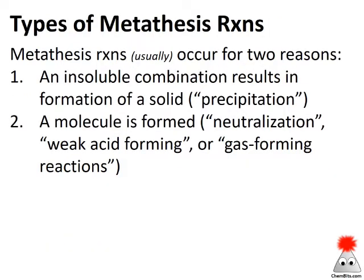Usually when we're looking at metathesis reactions, there are two things that can occur that will make the reaction happen. Number one is that one of the combinations results in an insoluble salt and we have a precipitation reaction. The other option is that a molecule is formed — this includes neutralization (acid-base reactions), weak acid or weak base forming reactions, or gas-forming reactions. In all those cases the reason the reaction occurs is because we're forming a molecule.